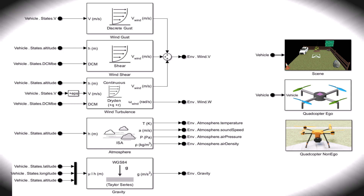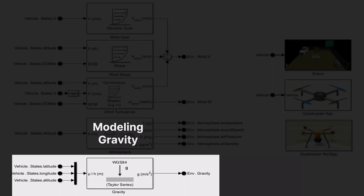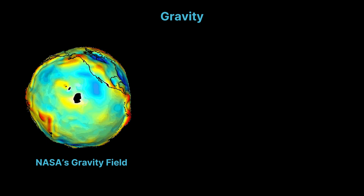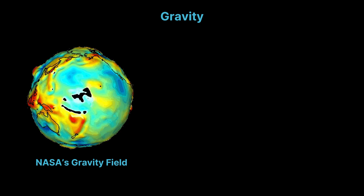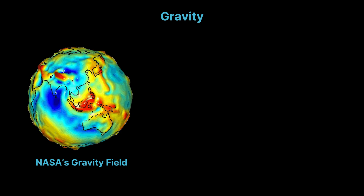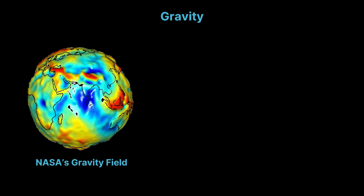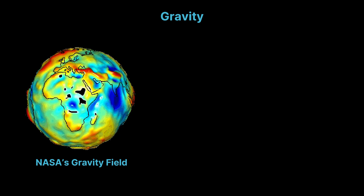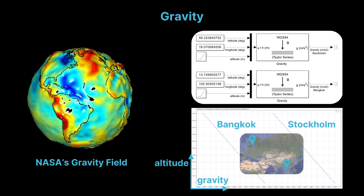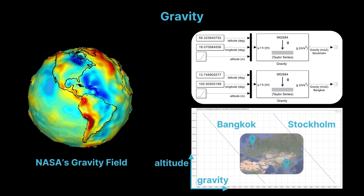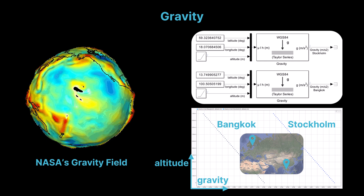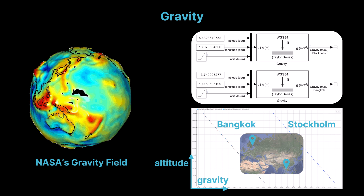Next, we'll move on to modeling gravity in the simulation. NASA's gravity field model is based on precise satellite measurements and global models. These models account for variations in Earth's gravitational field due to its shape and the presence of mountains, valleys, and other large-scale geological features. They represent Earth's gravity field as a series of spherical harmonics, which help calculate the gravitational potential and acceleration at any given location on or above the Earth's surface. In Simulink, gravity can be modeled either as a constant or by using the gravity block, which accounts for latitude, longitude, and altitude. The figure illustrates the gravity variation between Bangkok and Stockholm, highlighting the significant difference in gravity due to their contrasting latitudes.